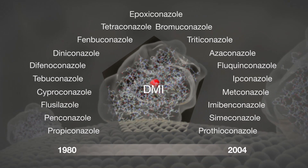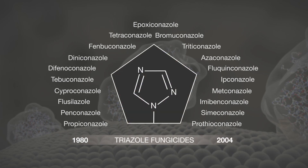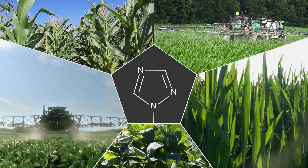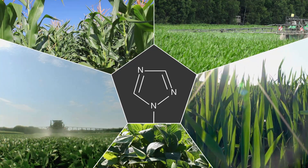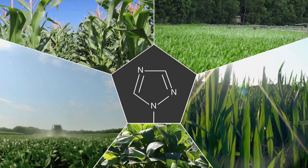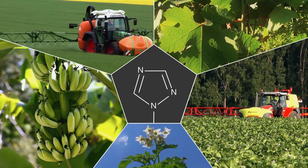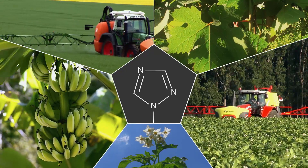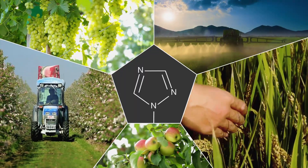Most of the well-known DMI fungicides have been in use for several decades. Almost all of them belong to one chemical group characterized by a triazole ring. All over the world, triazole fungicides are the backbone of disease control strategies for a wide variety of crops. Despite recent declines in their efficacy, triazole fungicides are still essential for effective resistance management.